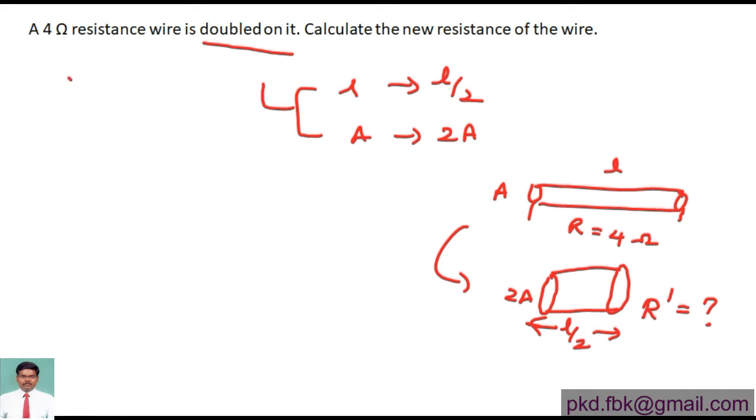ρ equals R times A by L, the resistivity formula. In that, I am separating R, so R is equal to ρL by A. This value I know. I am first writing it for this, the first case. The resistance for the first case I know will be equal to 4 ohms. I am representing it as equation number 1.